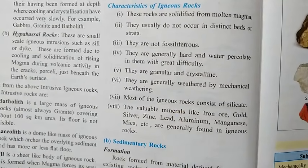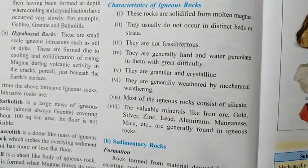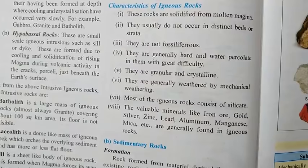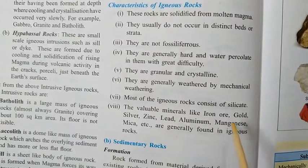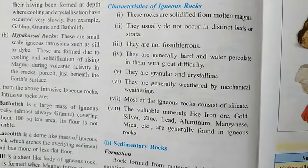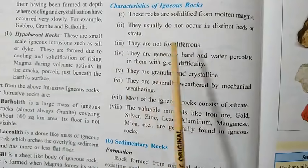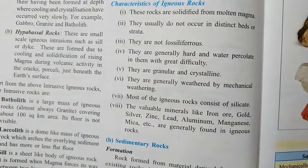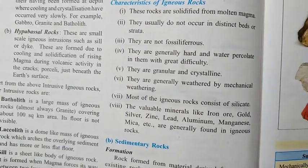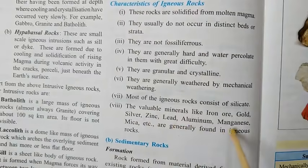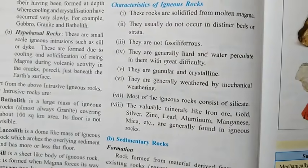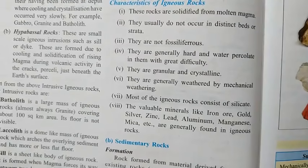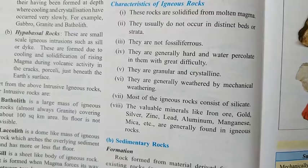Seventh, most igneous rocks consist of silicates. The amount of silicate can be less or more — on that basis they are categorized into acidic igneous rocks and basic igneous rocks. The acidic igneous rocks usually contain many minerals like iron ore, gold, silver, zinc, lead, aluminium, manganese, and mica. The basic igneous rocks, after a very long time of weathering, can turn into fertile lava soil.